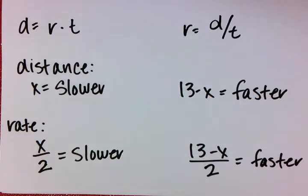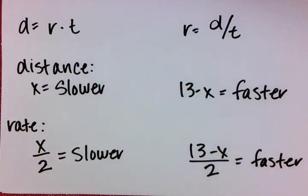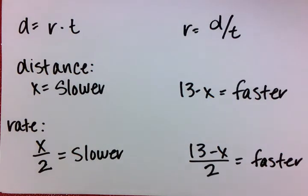We know that there are 13 miles total. We're going to establish x as our slower hiker's distance. Then 13 minus x, which is the total miles minus the slower hiker's distance, will give us the faster hiker's distance.